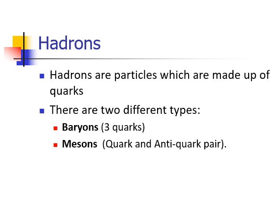Then we have things called hadrons. Hadrons are all particles that are made up of quarks. There are two different types: baryons, which are three quarks, and mesons, which are two quarks.